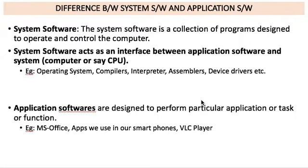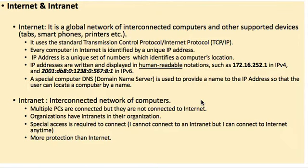System software includes mostly operating systems and device drivers. Examples of system software: operating systems, compilers, interpreters, assemblers, and device drivers. All other software is application software. MS Office is an application software because it allows you to perform a specific task. Apps like VLC player and Google Chrome are also application software.